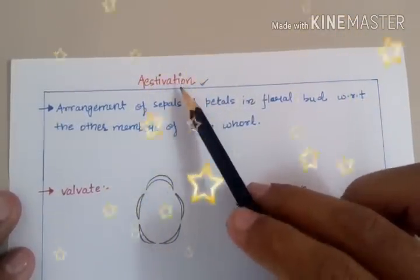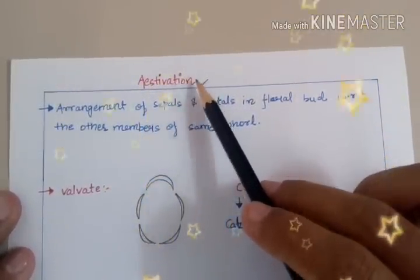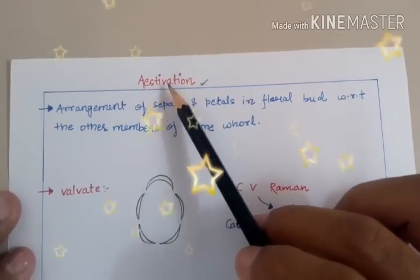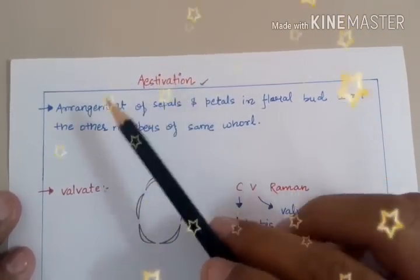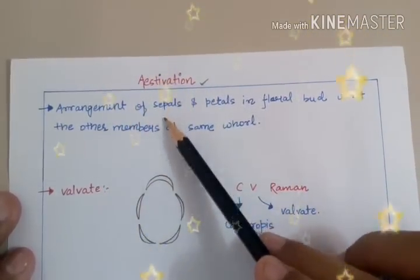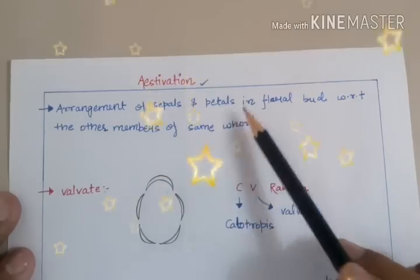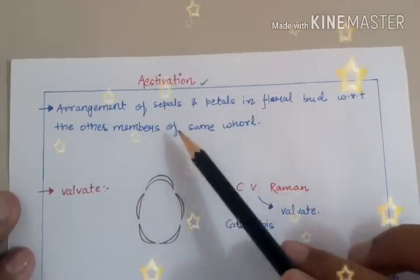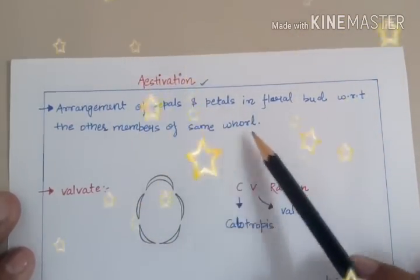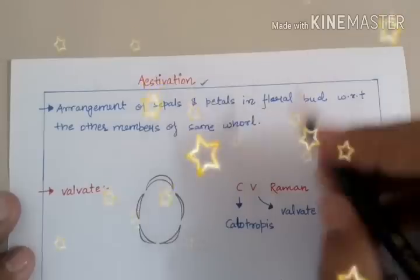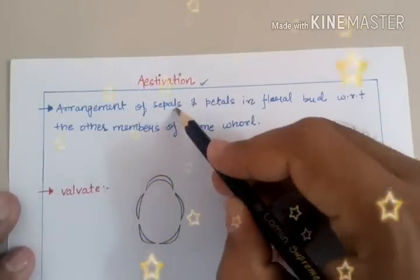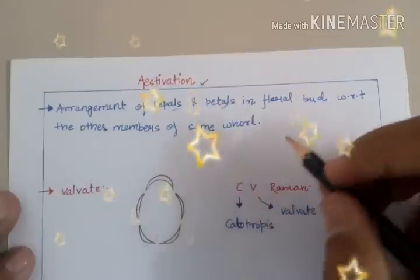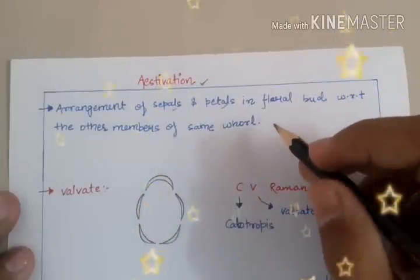Firstly we have to understand what this particular term means. The definition of Estivation: it is the arrangement of sepals and petals in a floral bud with respect to other members of the same whorl. So this is the arrangement of sepals or petals in a floral bud with respect to other members of the same whorl.